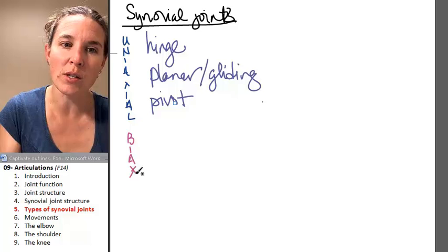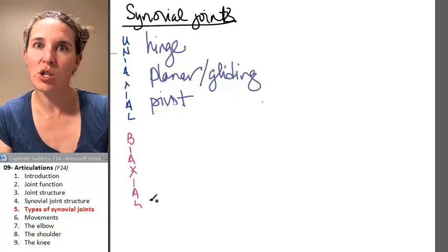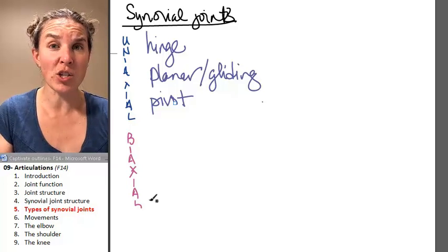You know it's true. Biaxial joints allow movement in two planes. And guess what? We've got two of them.